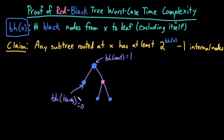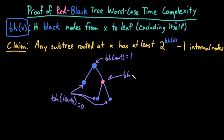The black height of each of the leaves is zero. Even though each of them is itself a black node, I cannot count the node itself when counting its black height. Excluding itself, there are no black nodes on the path from the leaf to a leaf, because it is a leaf, so that path is just itself. This node has a black height of 1 — there are two possible paths from it to a leaf, and in either path there is exactly one black node.